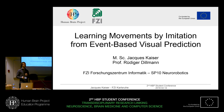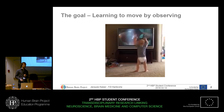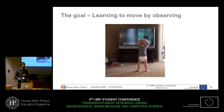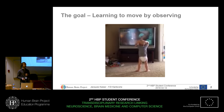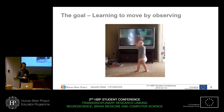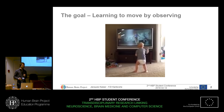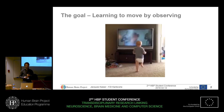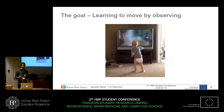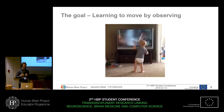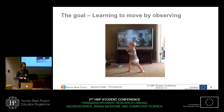Learning Movements by Imitation is a skill that humans can do from a very young age. As you can see in this video, you have a baby which has probably seen the movie Rocky Balboa thousands of times. And just by looking at what Rocky is doing in the movie, he is able to perform the same motion on his own body.